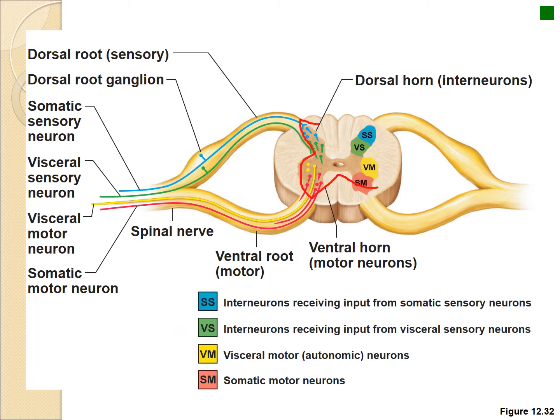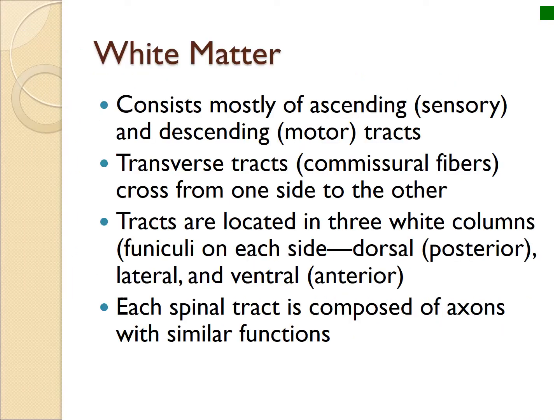Your gray matter has different regions — don't memorize all of them. There's your dorsal root, and those are sensory nerves. Motor neurons are related to the inside of the actual spinal cord itself. These pathways are broken down into specific regions handling different information going up, down, and side to side, and controlling reflexes.